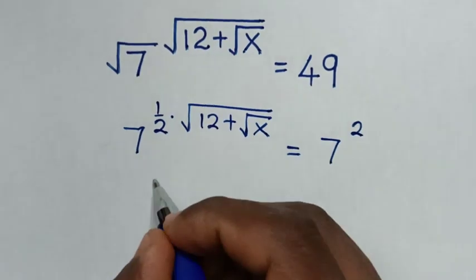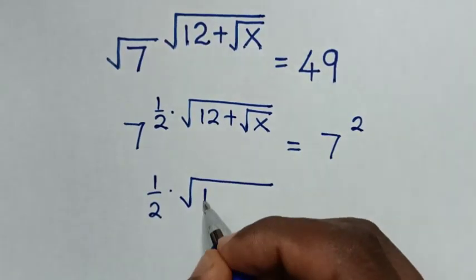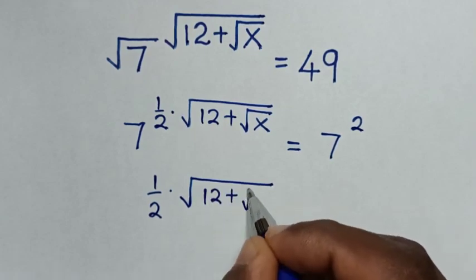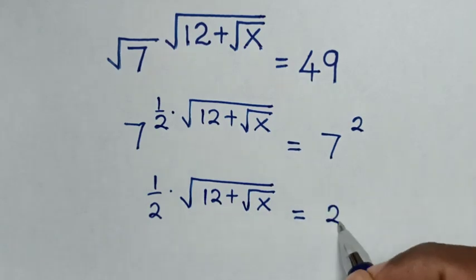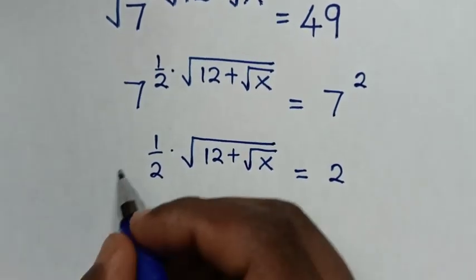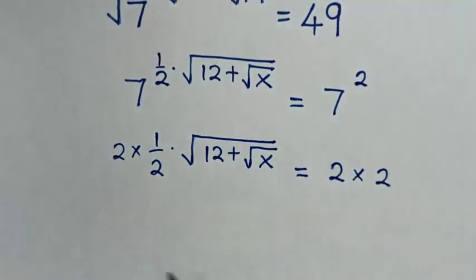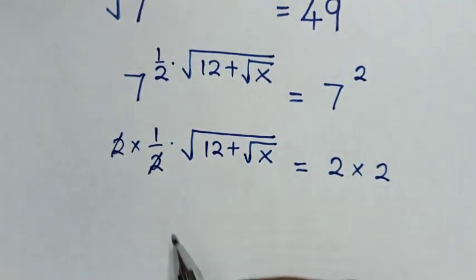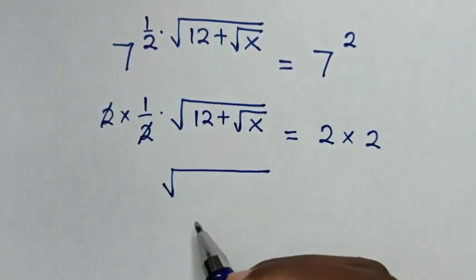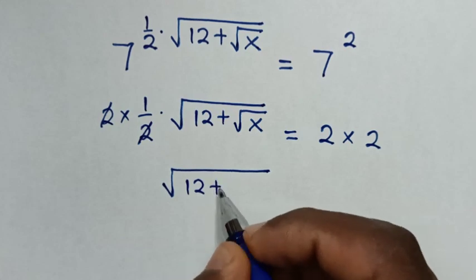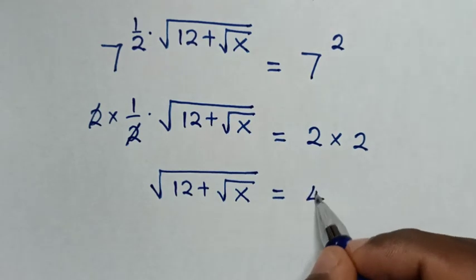So it will be: one half times square root of 12 plus square root of x is equal to 2. Then, in the next step, to remove this fraction, we'll multiply by 2 on both sides. These 2s will cancel, giving us square root of 12 plus square root of x is equal to 4.